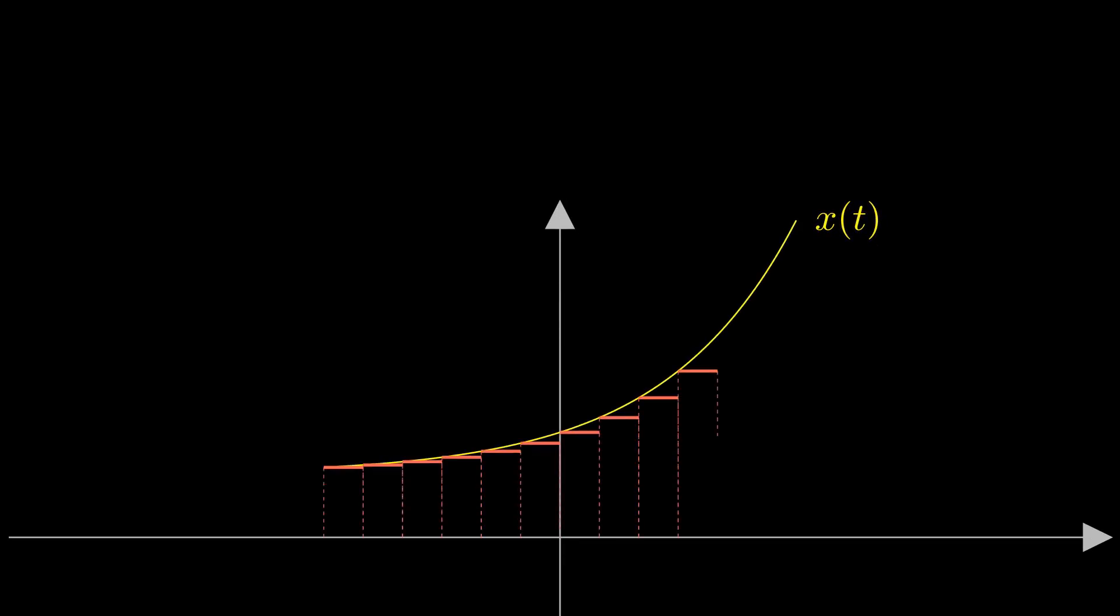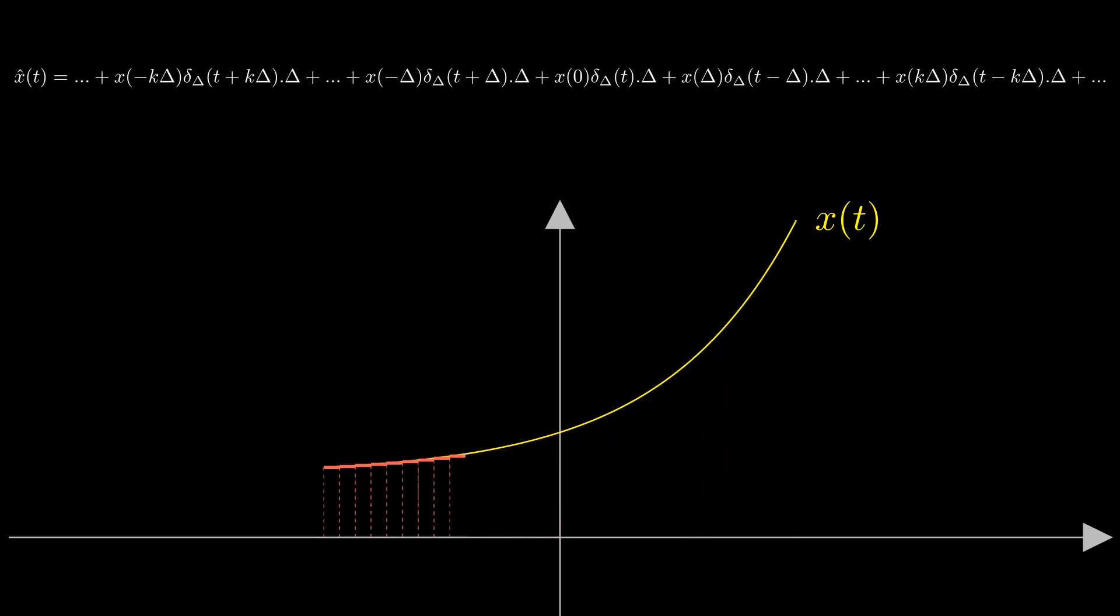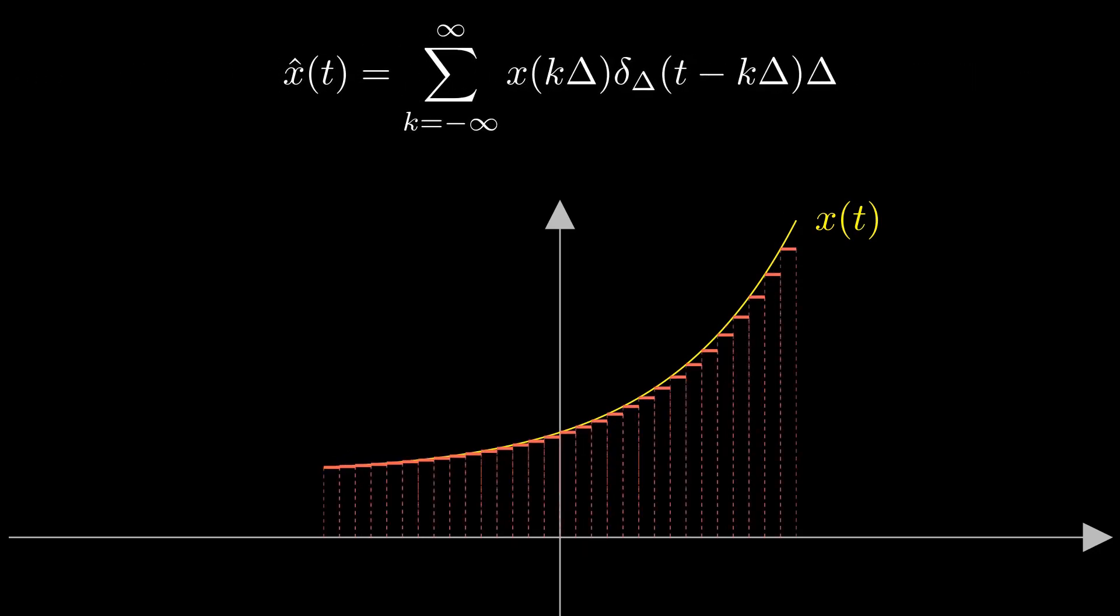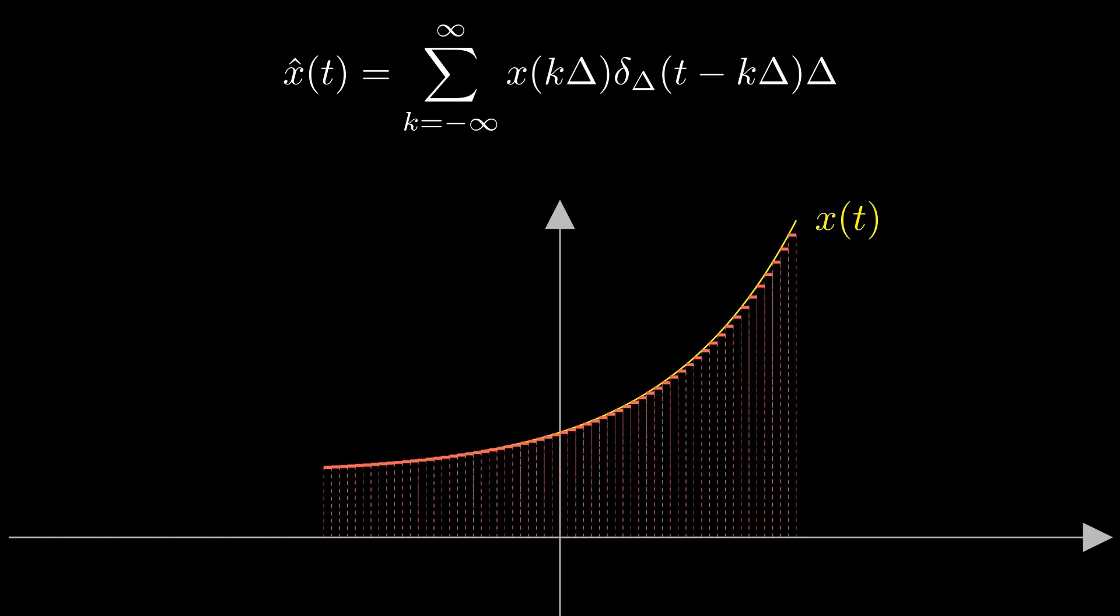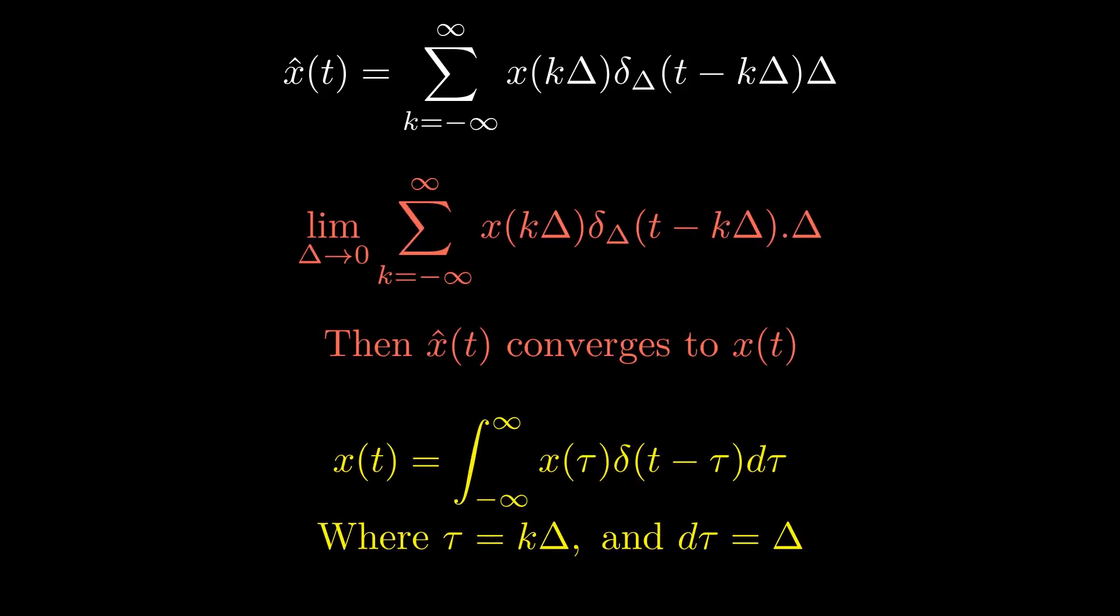Doing the same procedure for all the time intervals, we get a staircase waveform that approximates the original signal. The smaller the value of delta, the better the approximation. Applying the limit to the approximated waveform where delta approaches zero, we get a waveform that converges to the original signal. So any arbitrary signal x(t) can be represented as a linear combination of weighted time-shifted impulse functions.